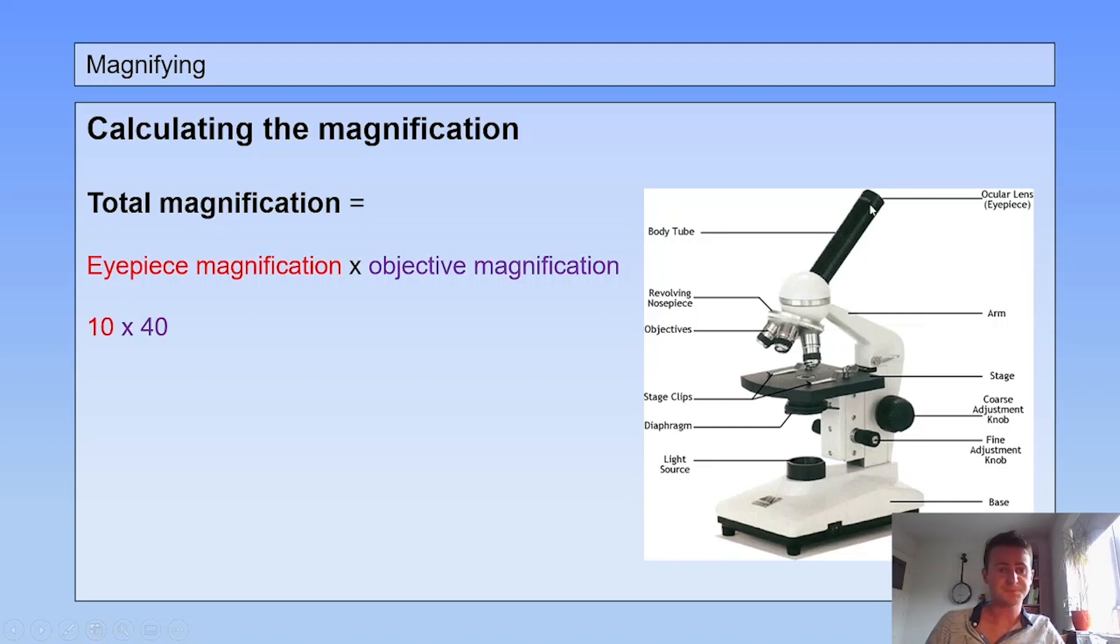So if your eyepiece magnification magnifies ten times and your objective magnifies 40 times, your total magnification is 400 times. So eyepiece magnification times objective magnification is your total magnification. So that is the magnification of your microscope.